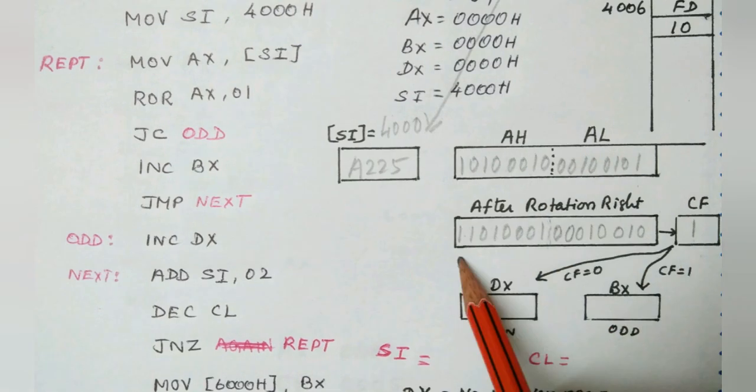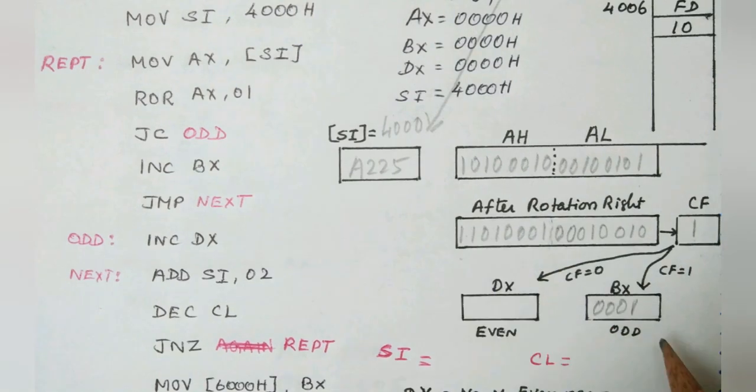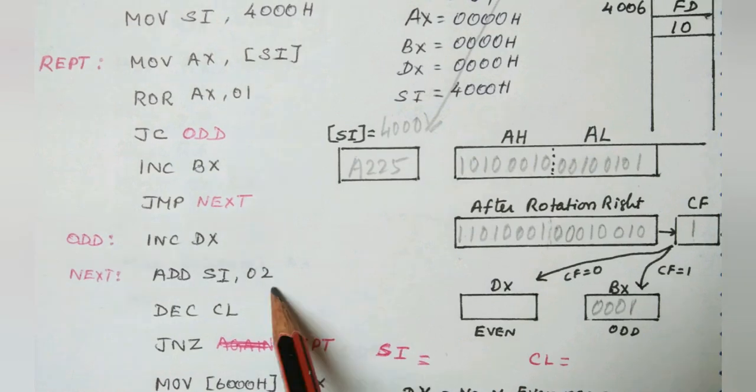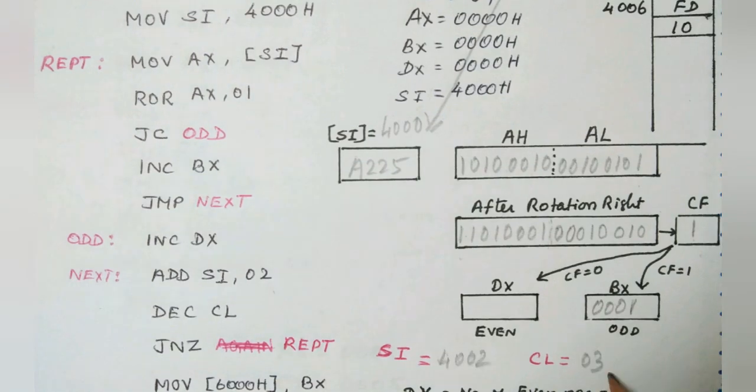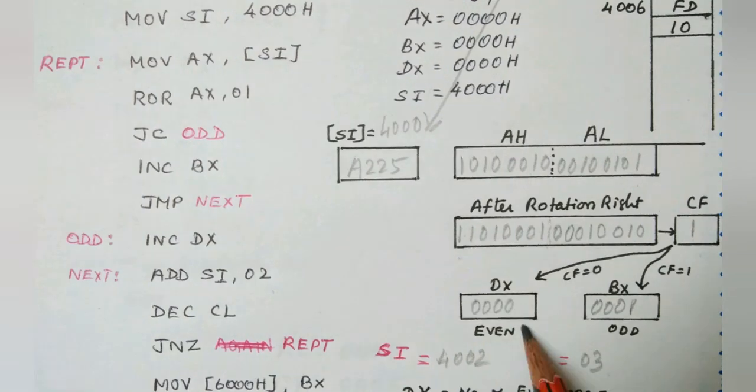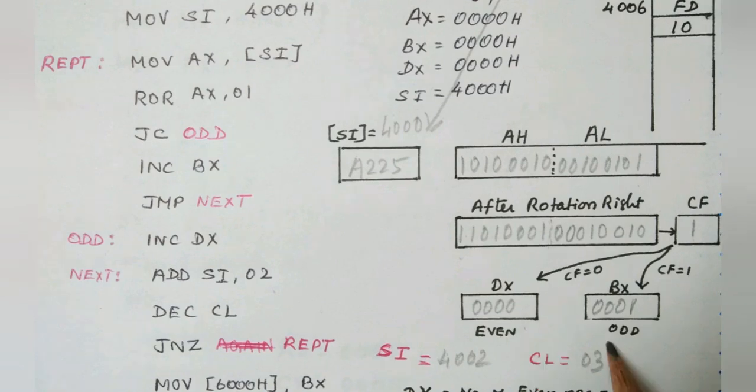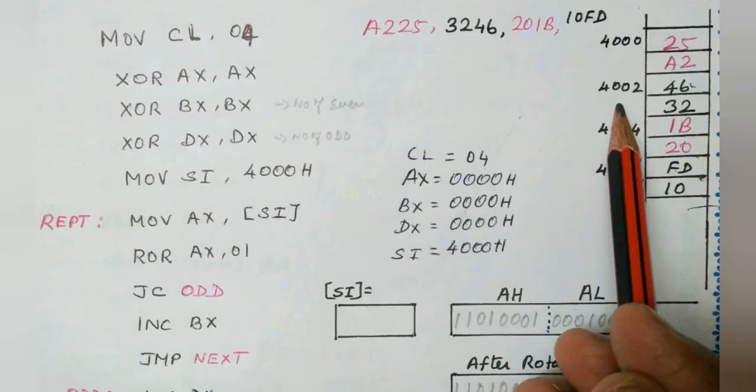So if CF equals 1, the BX register will be incremented. Now BX will be having the value 0001. Then we add SI register by 2 so that it can point to the location 4002, and the CL register will be decremented. At the same time, DX holds the value of 0. The odd is incremented by 1 because the first number is odd.